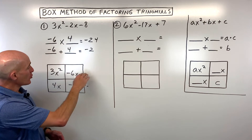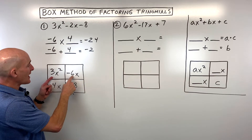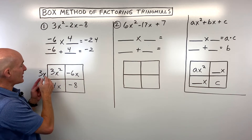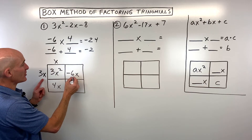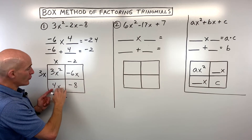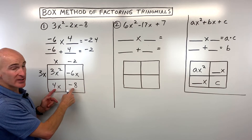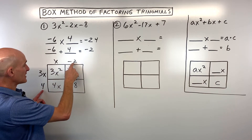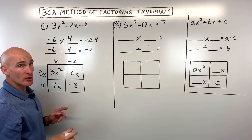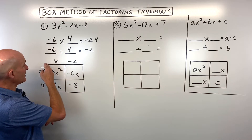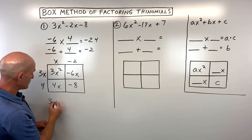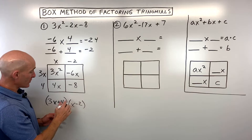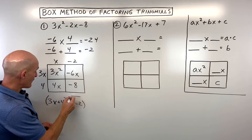Now we look at these rows horizontally and ask: what's the greatest common factor — what can I factor out of both terms? It looks like I can factor out a 3x. Dividing by 3x leaves x, and dividing the other by 3x leaves negative 2. For the second row, I can factor out a 4. Double-checking: 4 times x is 4x, and 4 times negative 2 is negative 8. So this is the area of a rectangle — length times width — giving us 3x plus 4 times x minus 2. This is your final factored form.